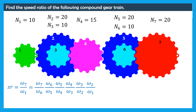Gears 6 and 7 are meshed together, thus omega 7 over omega 6 is equal to minus N6 over N7. The negative sign shows that gears 6 and 7 rotate in opposite directions. Gears 5 and 6 are mounted on the same shaft, thus they have the same speed. Hence, omega 6 over omega 5 is equal to 1.